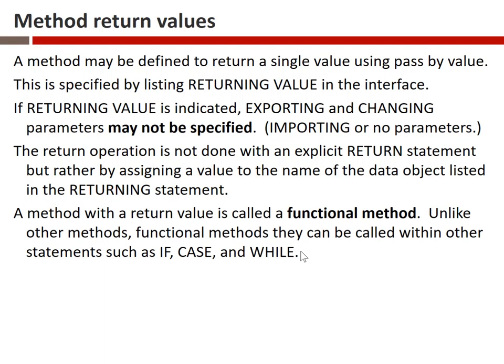This kind of method has a particular name — we call it a functional method. Functional methods give us the ability to use them in places where we cannot use other methods. For example, in ABAP we could write something like 'if the square root of x is greater than 20' — we can combine a functional method call directly in a conditional. We cannot do this with other method types, so that is a unique characteristic of functional methods.